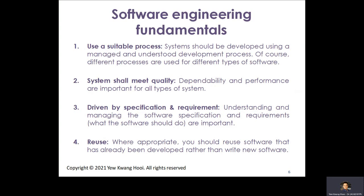In academic work, reuse is bad — plagiarism is discouraged and we want originality. But in software engineering, reuse is promoted. The rationale is that with reuse, we can save a lot of energy, time, and resources to build more complex systems. Systems are modularized and you can reuse those components to build your software, saving a lot of time and resources. That's why reuse is promoted in software engineering.